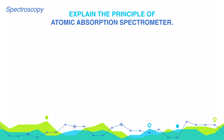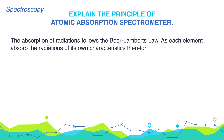The absorption of radiation follows Beer-Lambert's law. As each element absorbs the radiations of its own characteristic, therefore a separate source of radiations is required.